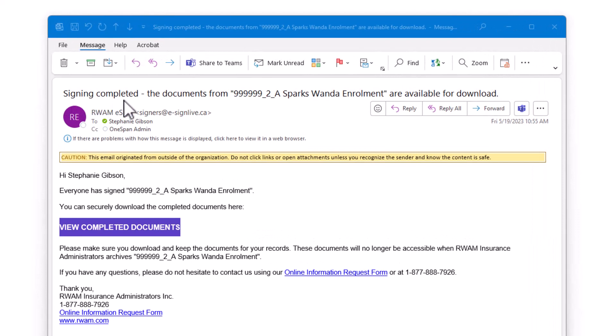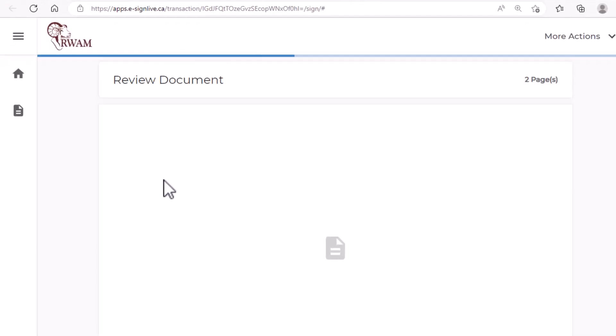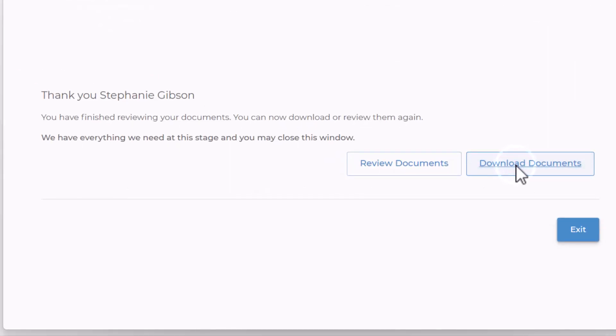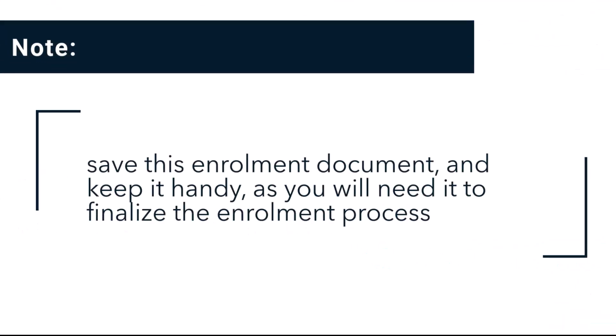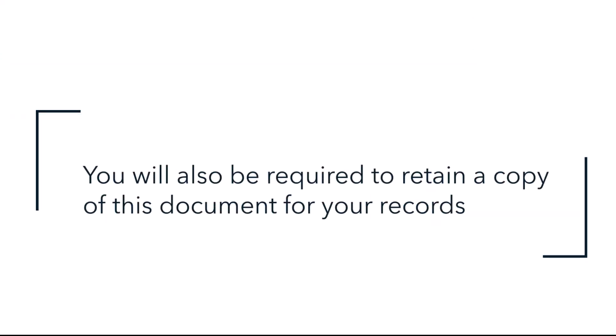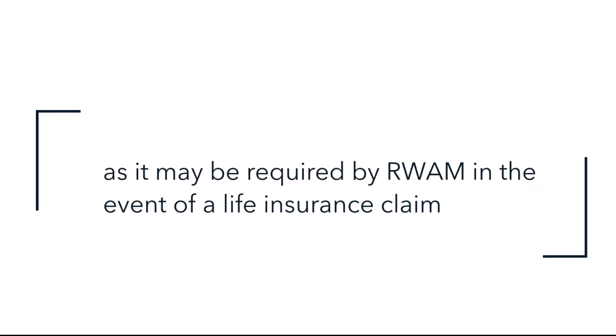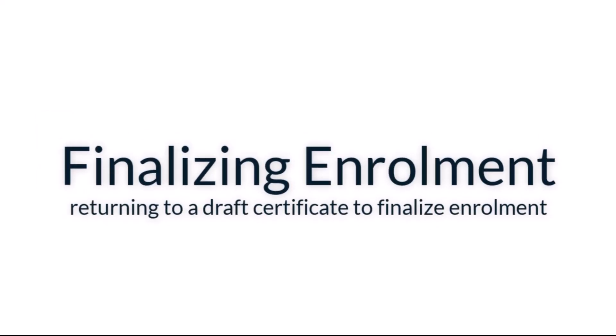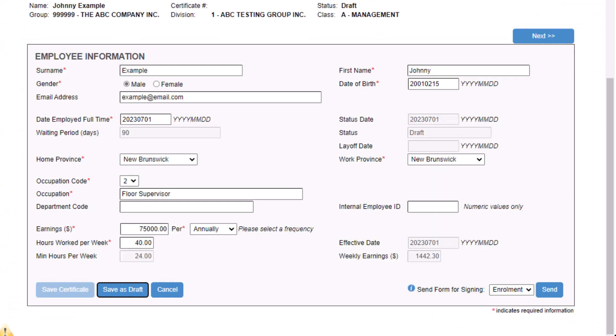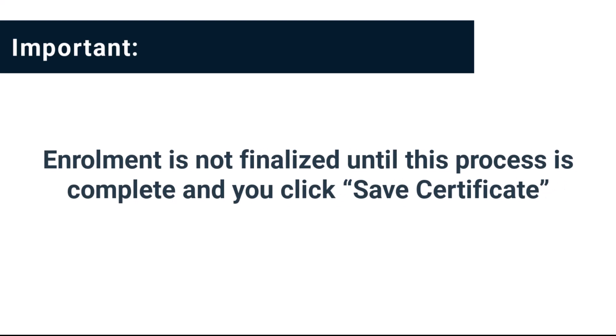Once your employee has completed their digital enrollment form, you will receive an email with the digital copy. Click the link provided in the email to download the completed enrollment form. Ensure you save this enrollment document and keep it handy as you will need it to finalize the enrollment process. You will also be required to retain a copy of this document for your records as it may be required by RAM in the event of a life insurance claim.